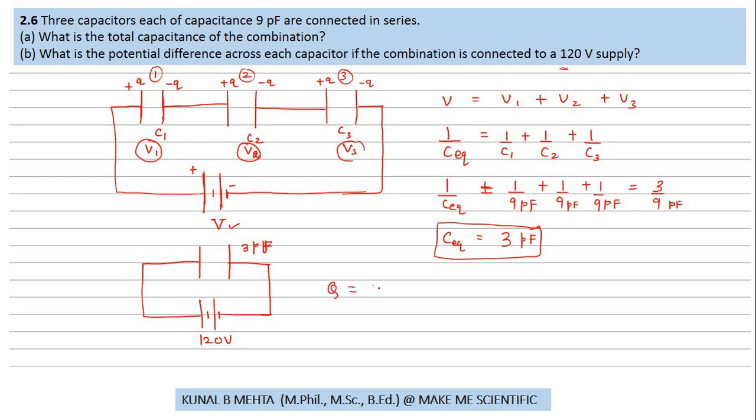Then Q is equal to CV which turns out to be 3 picofarad multiplied by 120 volts. So this is equal to 3 into 10 raise to minus 12 into 120 volts. So this is 360 into 10 raise to minus 12 and this will be in coulombs because we are dealing with the SI units.